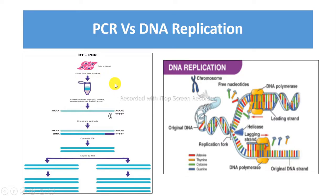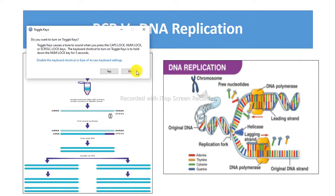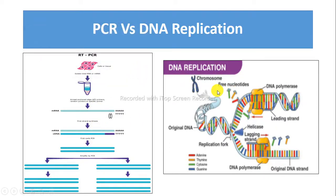Taq DNA polymerase operates at high temperatures such as 72 degrees Celsius, whereas DNA polymerase operates at physiological temperature which is 37 degrees Celsius.